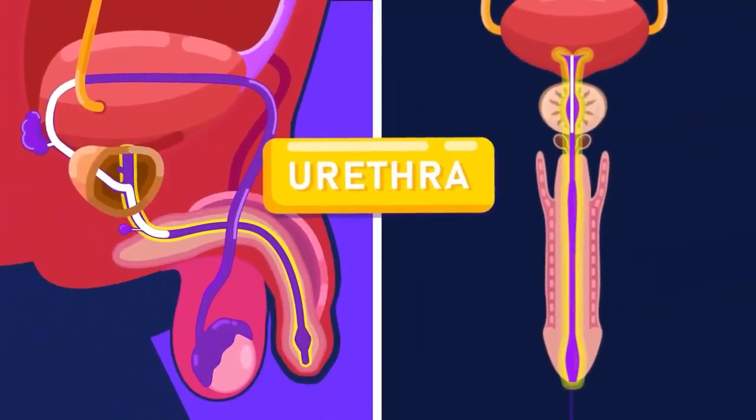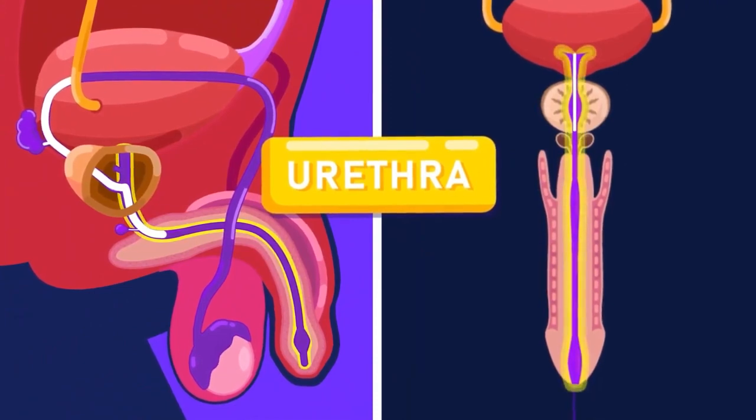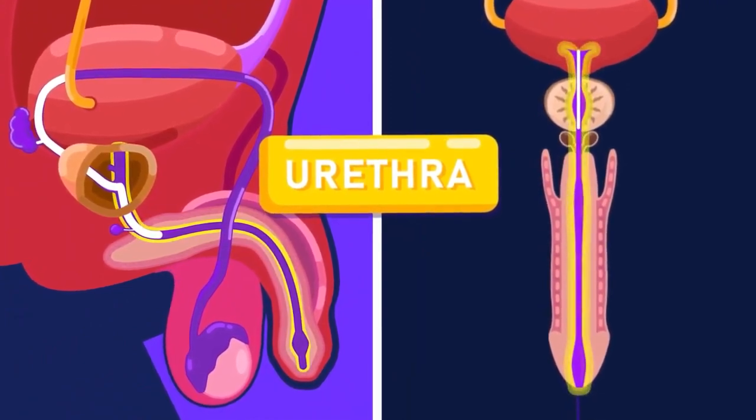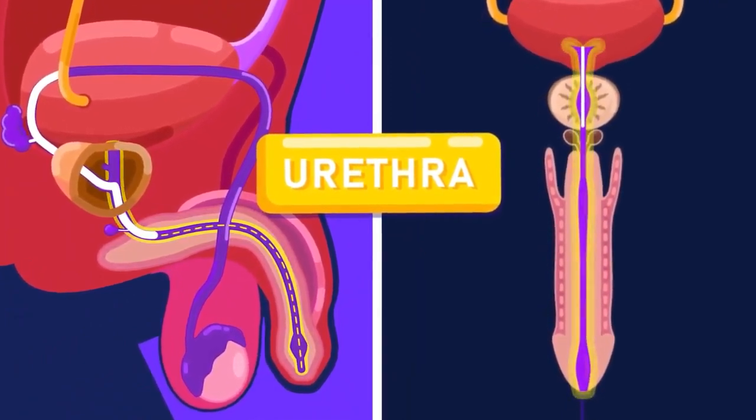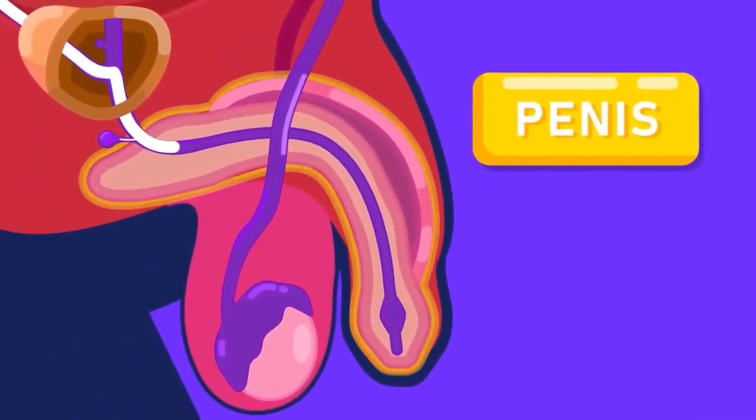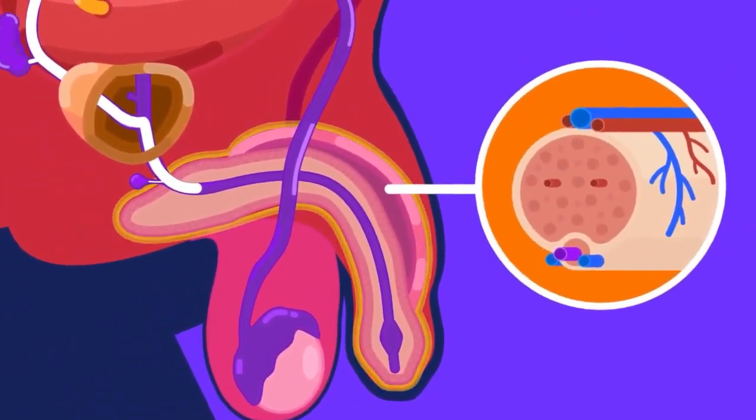The urethra is a tube that passes through the center of the penis to carry the semen to the exterior during ejaculation. The penis is an organ that contains erectile tissue with numerous blood spaces.